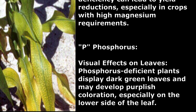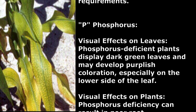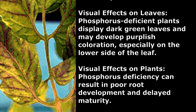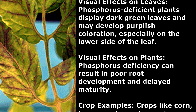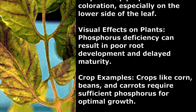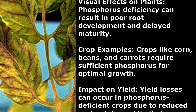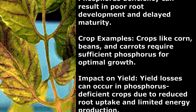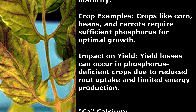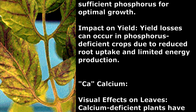Phosphorus. Visual Effects on Leaves: Phosphorus-deficient plants display dark green leaves and may develop purplish coloration, especially on the lower side of the leaf. Visual Effects on Plants: Phosphorus deficiency can result in poor root development and delayed maturity. Crop Examples: Crops like corn, beans, and carrots require sufficient phosphorus for optimal growth. Impact on Yield: Yield losses can occur due to reduced root uptake and limited energy production.